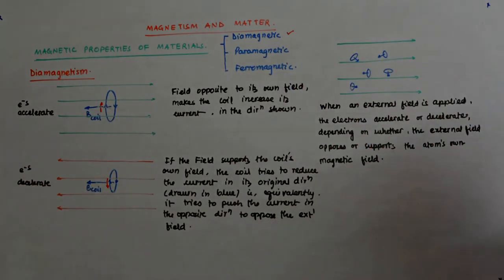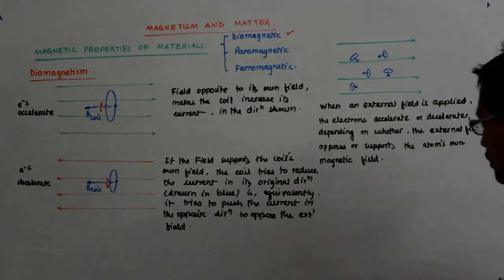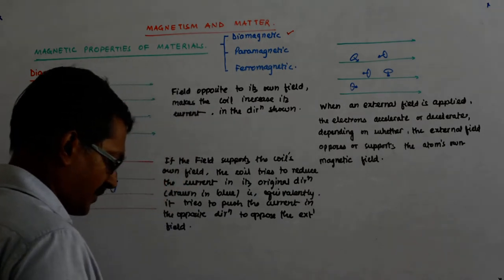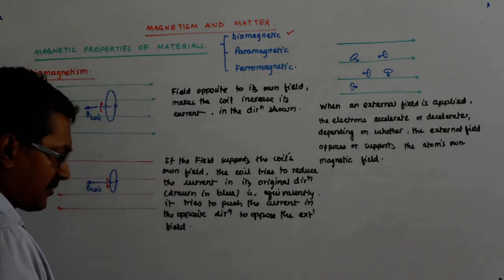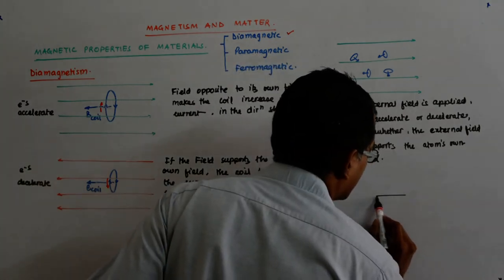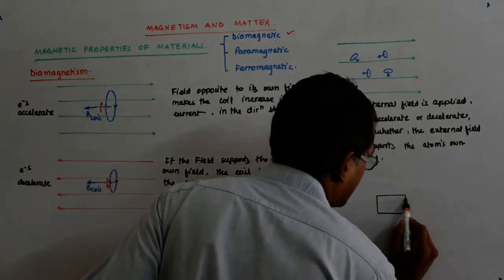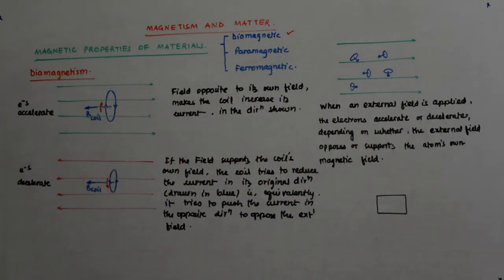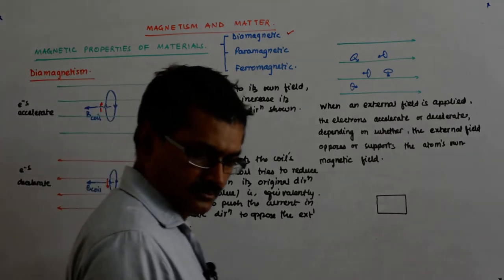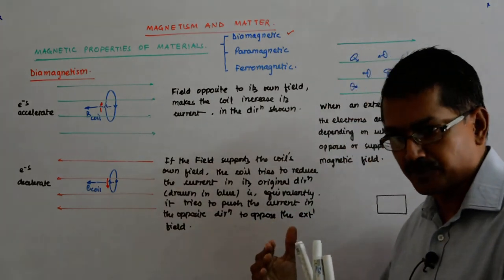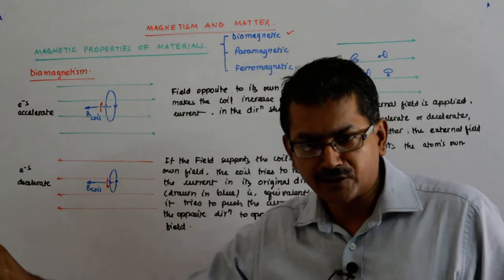In the net, I am opposing the external field. Say, this is my material — it is opposite to the direction of the magnetic field. Opposite to the direction of the magnetic field. So it responds by actually opposing you.